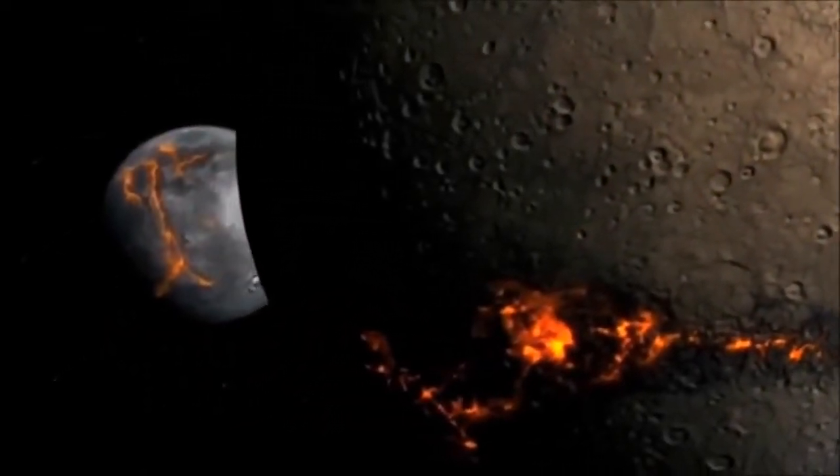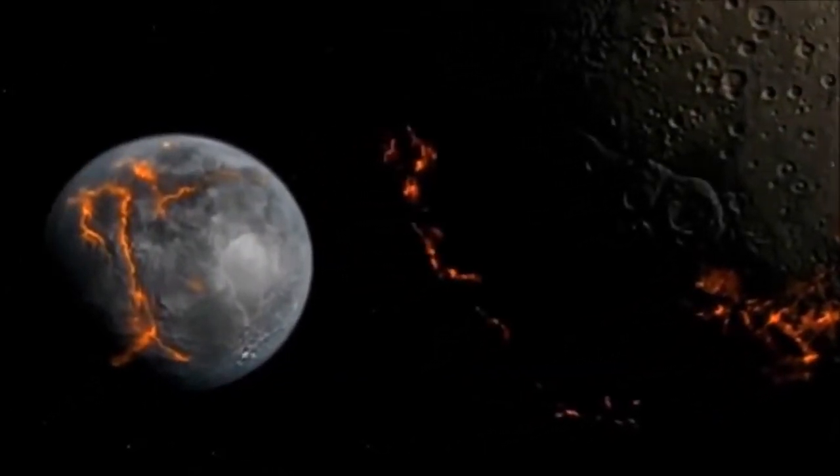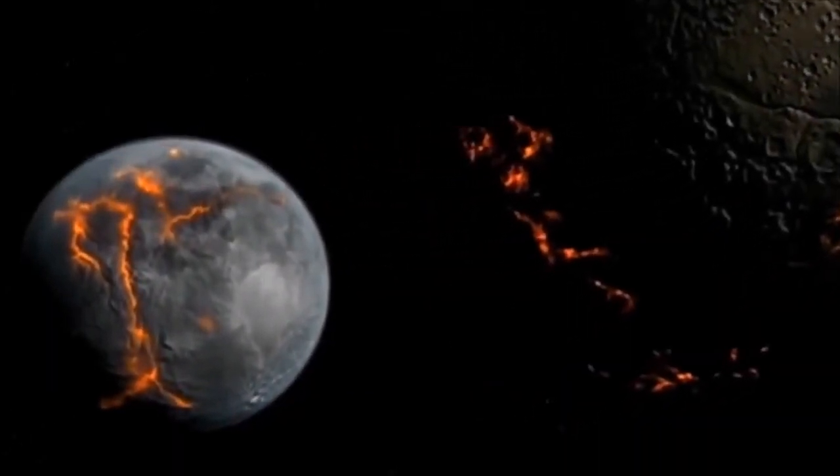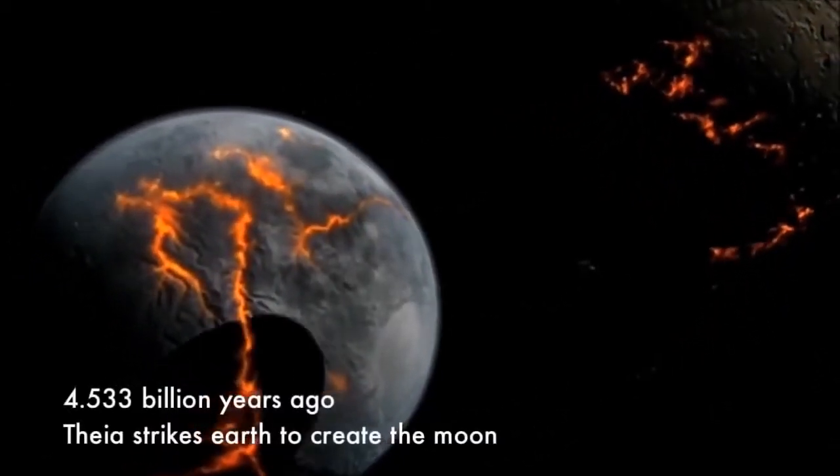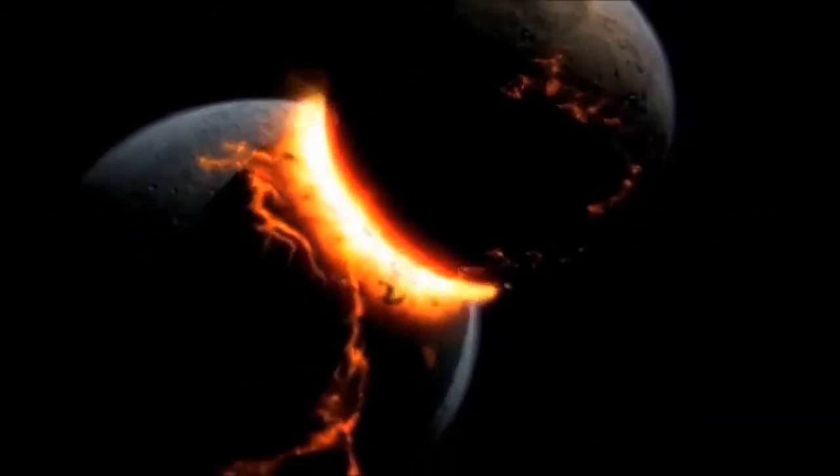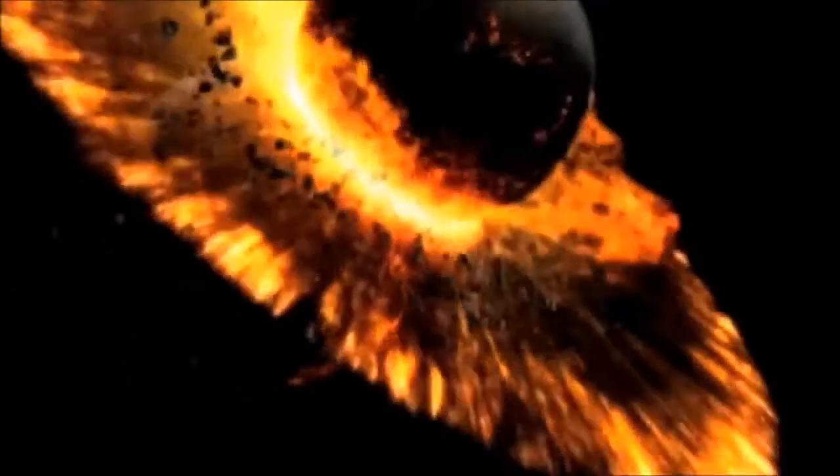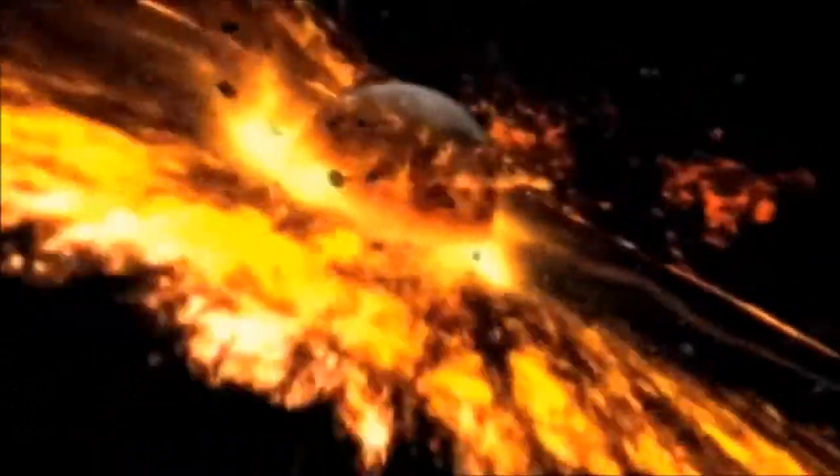The giant impact theory states that an asteroid, roughly the size of Mars, impacted the Earth during its formation. This Mars-sized asteroid was named Thea, which means goddess or divine in Greek mythology. The impact resulted in rocky surface material being blown outward from the Earth, some of which accreted to form the Moon.